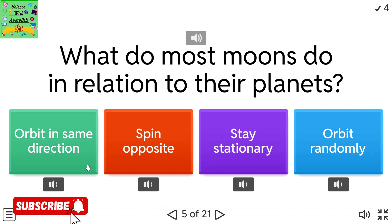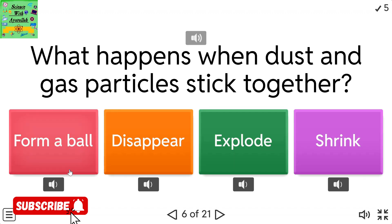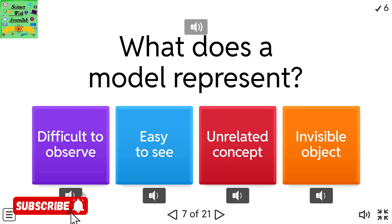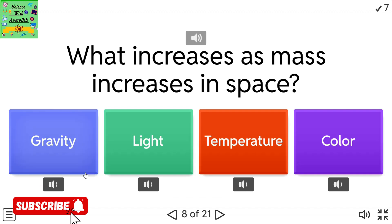What do most moons do in relation to their planets? Orbit in same direction, Spin opposite, Stay stationary, or Orbit randomly. What happens when dust and gas particles stick together? Form a ball, Disappear, Explode, or Shrink. What does a model represent? Difficult to observe, Easy to see, Unrelated concept, or Invisible object. What increases as mass increases in space? Gravity, Light, Temperature, or Color.